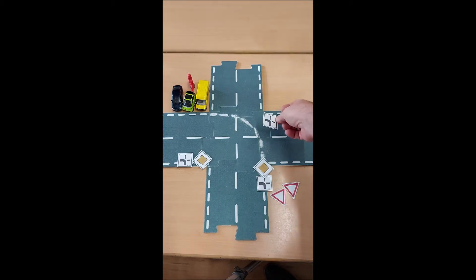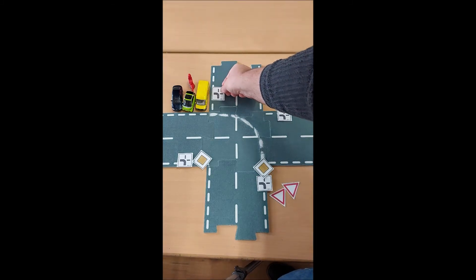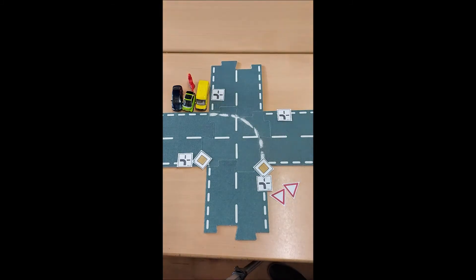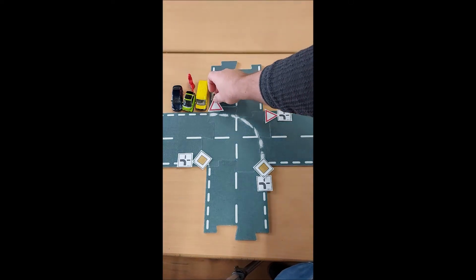Dann ist man auf einer kleinen. Man kommt auf einem Schild immer von unten. Dann sieht das so aus. Und wenn man von oben kommt, dann sieht das so aus. Und die beiden, weil sie von der kleinen Seite kommen, von den schmalen Streifen, von der Nichtvorfahrtsstraße, kriegen das Vorfahrtachtensschild.